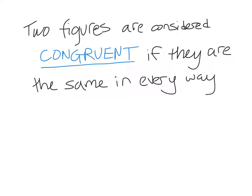Today we're going to talk about notation in terms of congruent triangles. The first thing we need to talk about is that two figures are considered congruent if they are the same in every way. That means angles, side lengths, area, and perimeter are all going to be the same.